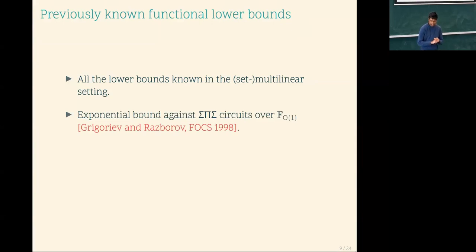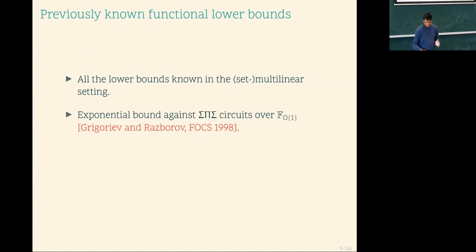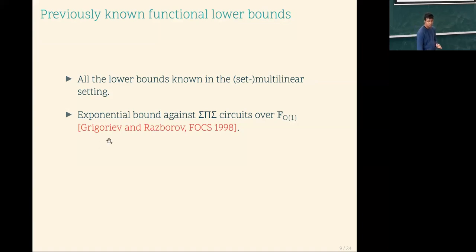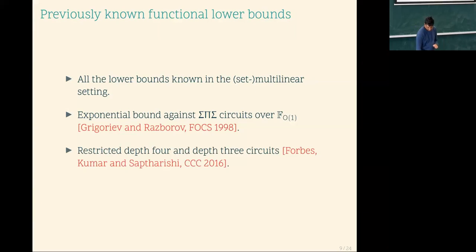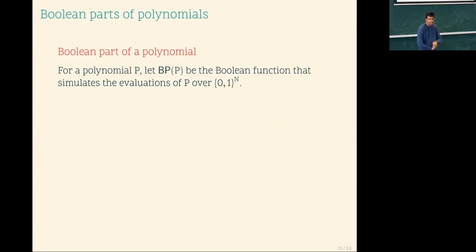One very crucial lower bound in the functional setting is given by Grigoriev and Razborov. When I say sigma-pi-sigma, that means it is a sum of products of linear forms. This result is for a fixed finite field, and the sub-domain considered is F*. So they look at functional lower bounds over F*. There are also some restricted depth-3 and depth-4 lower bounds from Michael Forbes, Rnald, and Rishi.